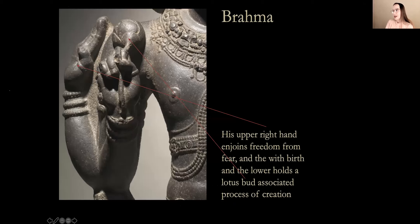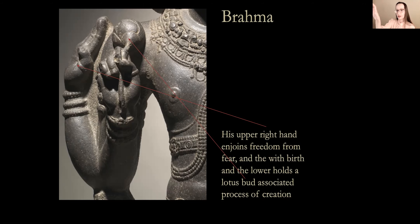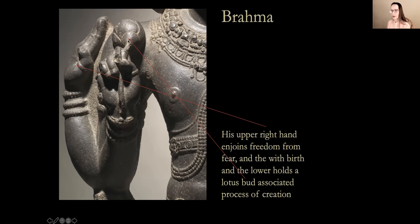Brahma's upper right hand brings together a gesture called a mudra — meaning sacred gesture — of freedom from fear. It's associated with the one who is adhering to the practices of being a Hindu, seeking growth in consciousness, and fulfilling their dharma. The lotus, associated with creation and its cycles, is part of that freedom — you need not fear. Creation will continue.